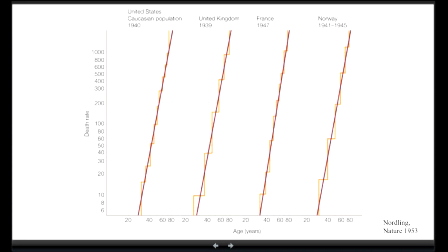But as a statistician, he was counting exactly the numbers. So he was counting how many people were dying from cancer at age 10, 20, 30 years old, and so on. And he did this plot here in four different countries. One was the United States, United Kingdom, France, and Norway.